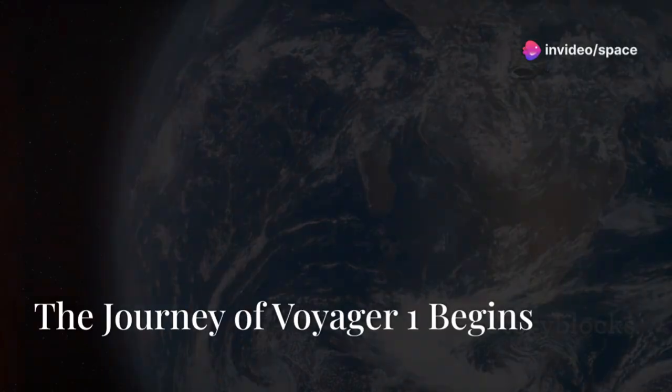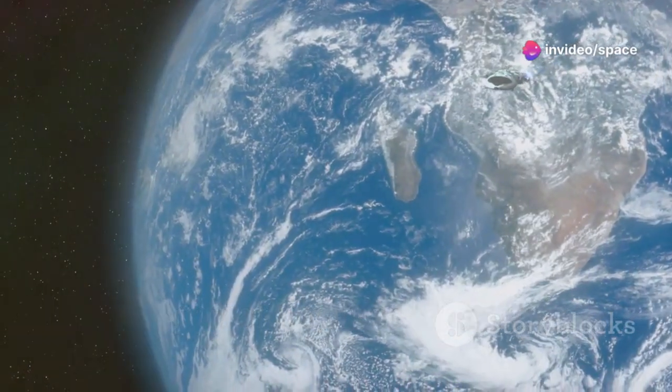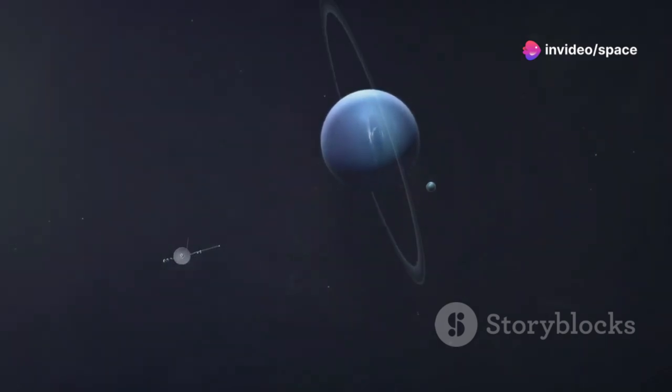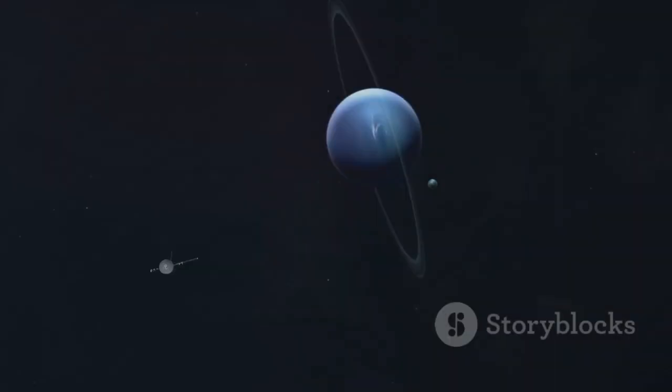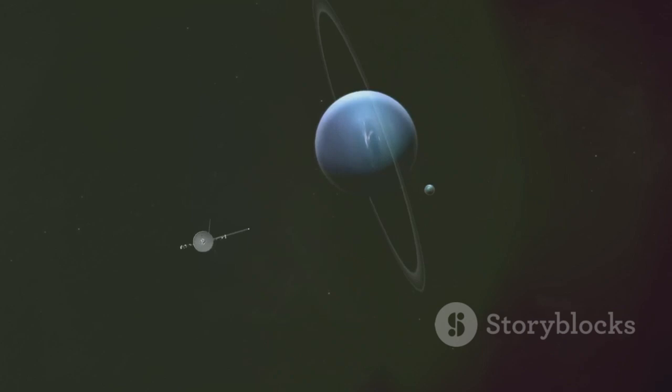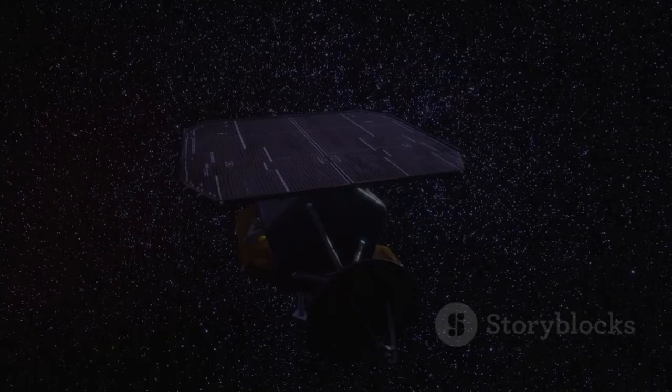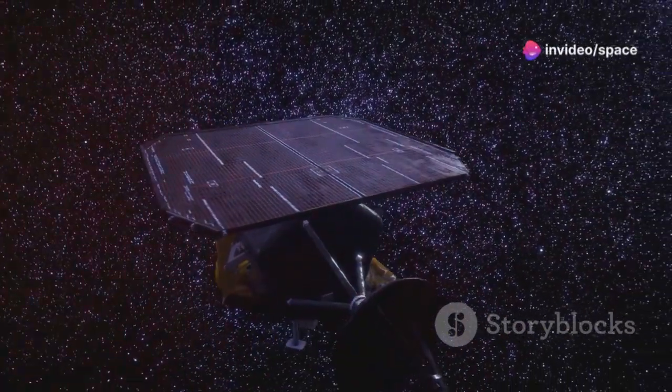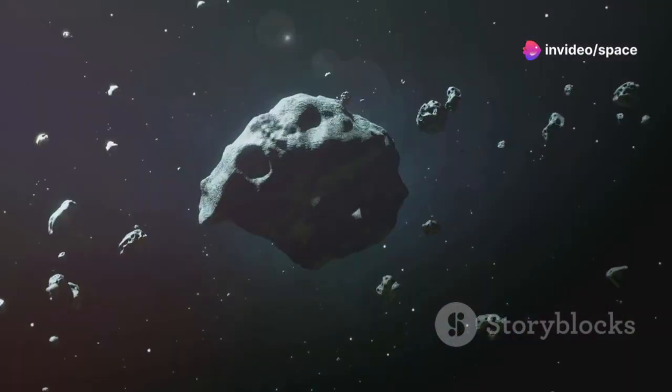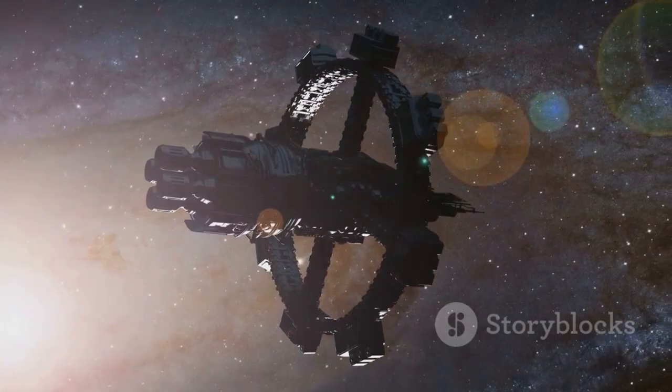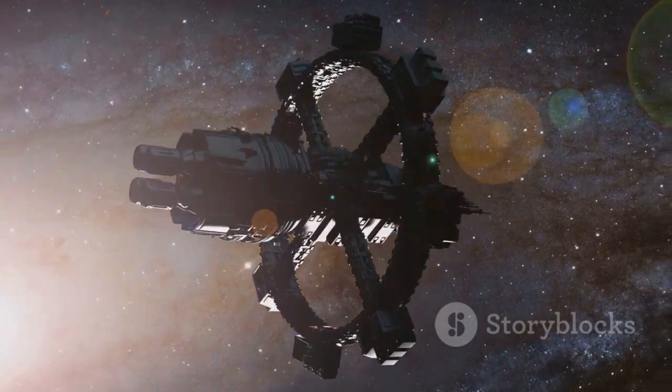On September 5th, 1977, humanity set off on an incredible voyage. A Titan-Centaur rocket launched Voyager 1 into the vastness of space. This daring mission aimed to explore the outer planets of our solar system. The primary targets were Jupiter and Saturn. Voyager 1 was built to capture groundbreaking images and collect scientific data. This data would transform our understanding of these gas giants.